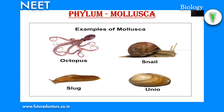Phylum Mollusca: they are mostly marine forms and some are fresh water — examples: Unio and Pila. They are generally bilaterally symmetrical and some are asymmetrical due to torsion. They are unsegmented soft-bodied animals covered by a calcareous shell, differentiated into head, muscular foot and visceral hump. Molluscs generally have a shell as exoskeleton; in octopus the shell is absent. The coelom is greatly reduced although they are eucoelomate. The digestive tract is complete and the mouth contains a rasping organ called radula with file-like transverse rows of chitinous teeth.